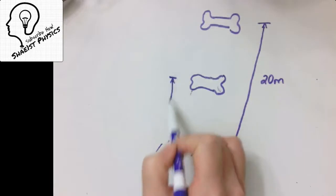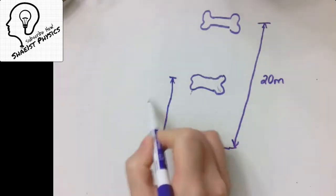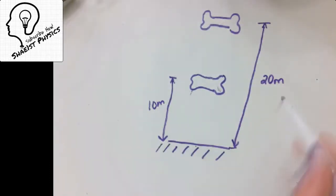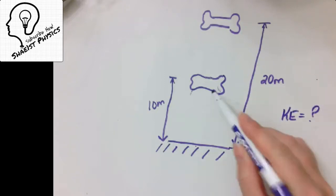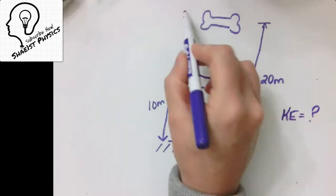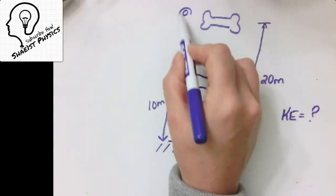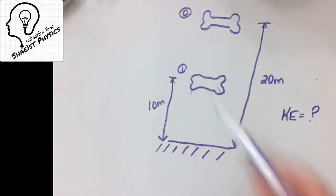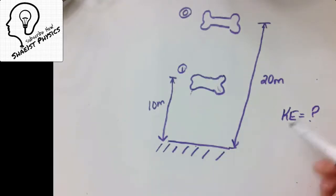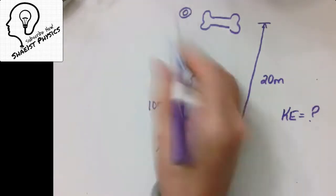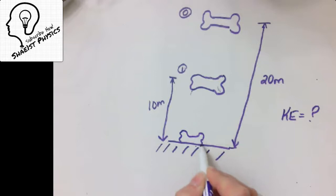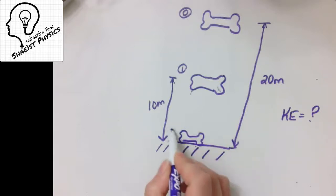We're interested in what happens after it falls halfway, and half of 20 is 10 meters. What is the bone doing when it gets to that halfway point? More specifically, what is the kinetic energy at this final moment? I'll call this moment 0 for initial and moment 1 for final — those are completely arbitrary numbers. Down here, once it hits the ground, that could be moment 2.